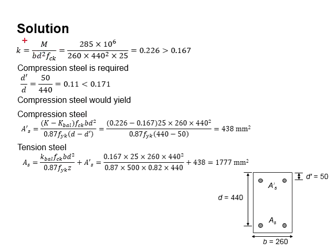With that, first we start with finding the k value. Substitute the relevant value into the equation for k, you will obtain it is equal to 0.226. The number is greater than 0.167. With that, you know that compressed steel is required.